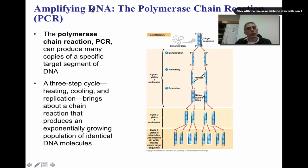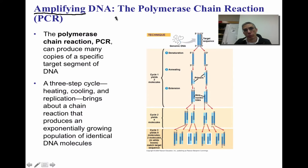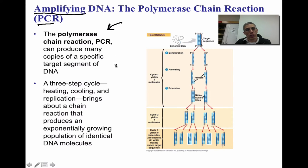Sometimes what we need to do is get many, many copies of that DNA, so we're going to amplify the process. We have a special process called PCR that's going to help us do that. PCR stands for polymerase chain reaction, and this can produce many, many copies of a specific targeted segment of DNA. It has three basic steps: the heating step, the cooling step, and the replication step.